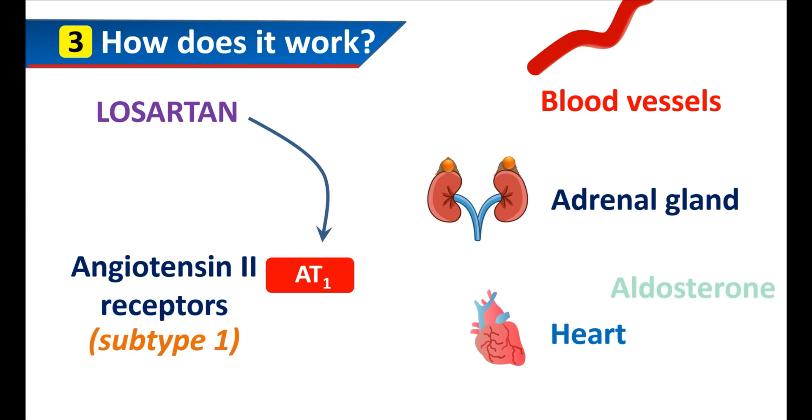From the adrenal gland, it can increase the secretion of aldosterone. On the heart, it increases the ventricular wall thickness, leading to cardiac hypertrophy.